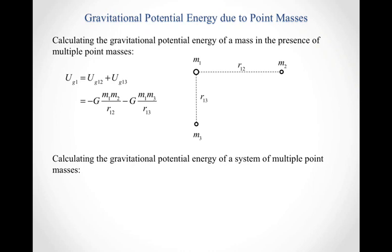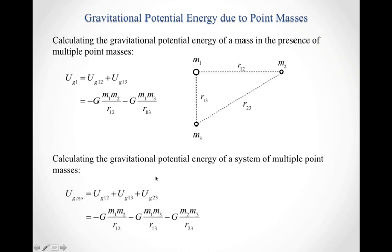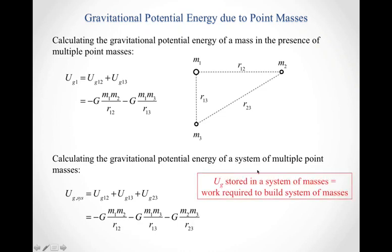To calculate the gravitational potential energy for a complete system of multiple point masses, include all pairwise interactions. For three masses, that means three terms: the interaction between masses 1 and 2, between masses 1 and 3, and between masses 2 and 3. Each term is calculated as negative big G times the product of the masses over the distance, then added up as scalars. The gravitational potential energy of the system represents the work required to build that system of masses.